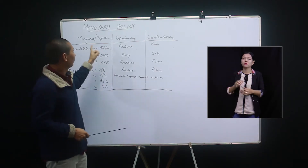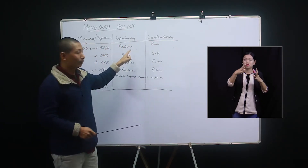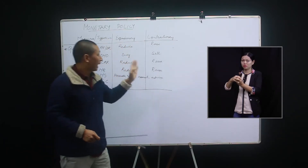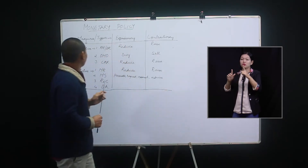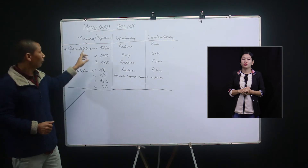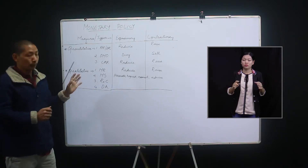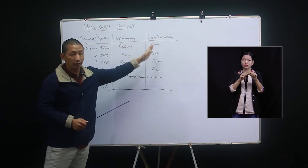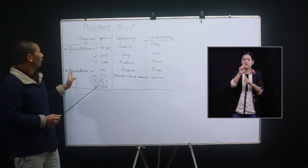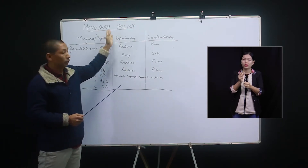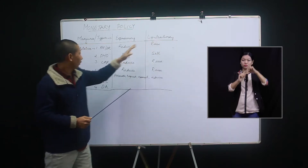Monetary policy has two types: expansionary and contractionary. Expansionary is also called easy monetary policy, and contractionary is also called tight monetary policy. Now there will be two measures of monetary policy: quantitative and qualitative. When the government adopts expansionary or contractionary monetary policy, they will use all the measures at a time — both quantitative and qualitative.